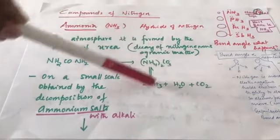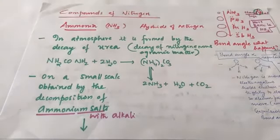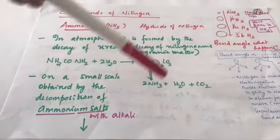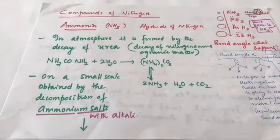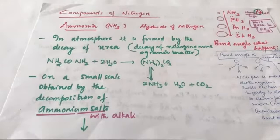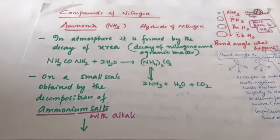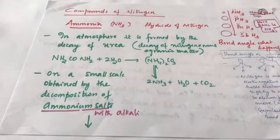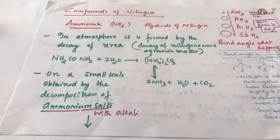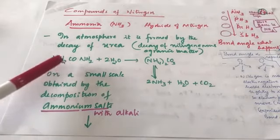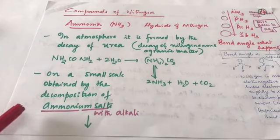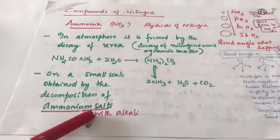Ammonia is present in small quantities in air and soil, where it is formed by the decay of nitrogenous organic matter containing urea. On a small scale, ammonia is obtained from ammonium salts that decompose when treated with an alkali such as caustic soda or lime.